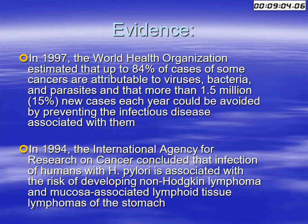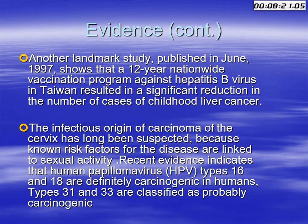Evidence of infection-associated cancer dates from 1997, when the World Health Organization estimated that up to 84% of cases of some cancers are attributable to viruses, bacteria, and parasites, and that more than 1.5 million new cases each year could be avoided by preventing the associated infectious diseases. In 1994, the International Agency for Research on Cancer concluded that H. pylori was an identified cause of MALT lymphoma of the stomach. A landmark study published in June 1997 showed that a 12-year nationwide vaccination program against hepatitis B virus in Taiwan resulted in a significant reduction in the number of cases of childhood liver cancer.